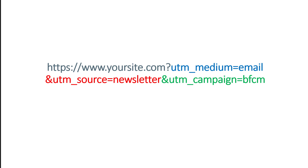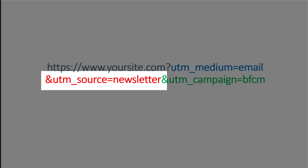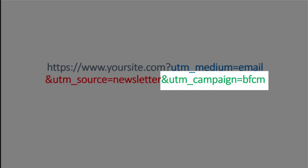UTMs are custom parameters that can be added to a URL. If a visitor lands on your website and those parameters are in the URL, then Google Analytics will know that the visitor came from that particular campaign, and things like revenue will be attributed to those campaigns. In this example, we have three UTM parameters: UTM medium, UTM source, and UTM campaign. If a visitor lands on the website by clicking that link, we will know they came from an email newsletter and the campaign was related to Black Friday Cyber Monday.